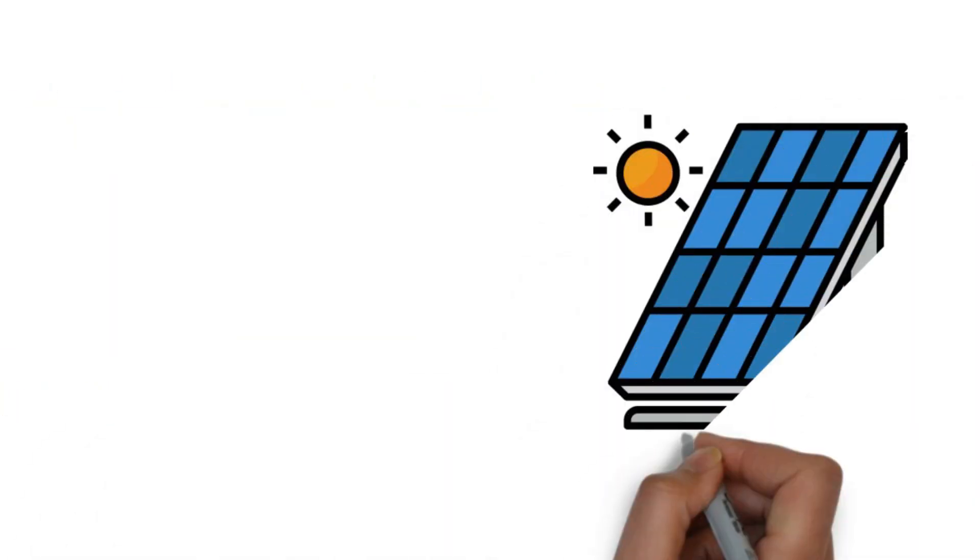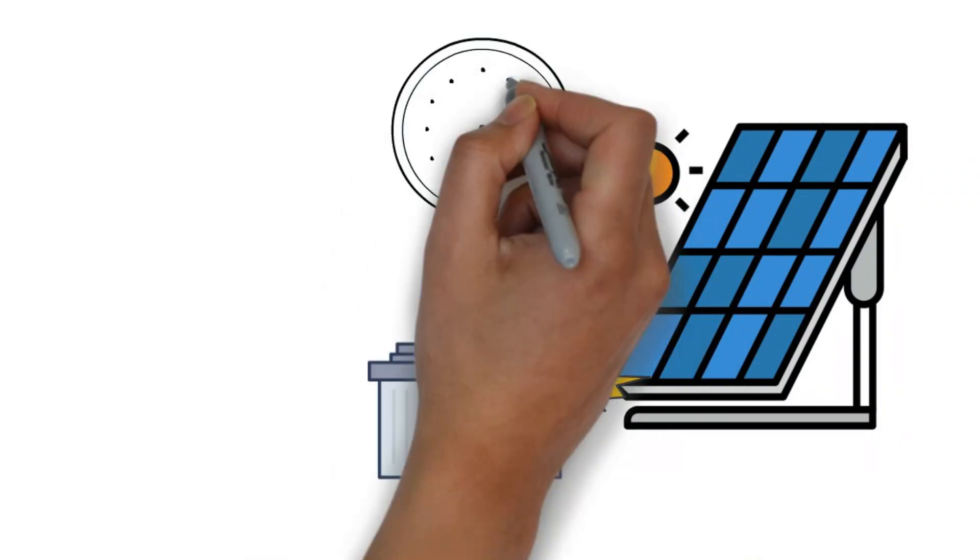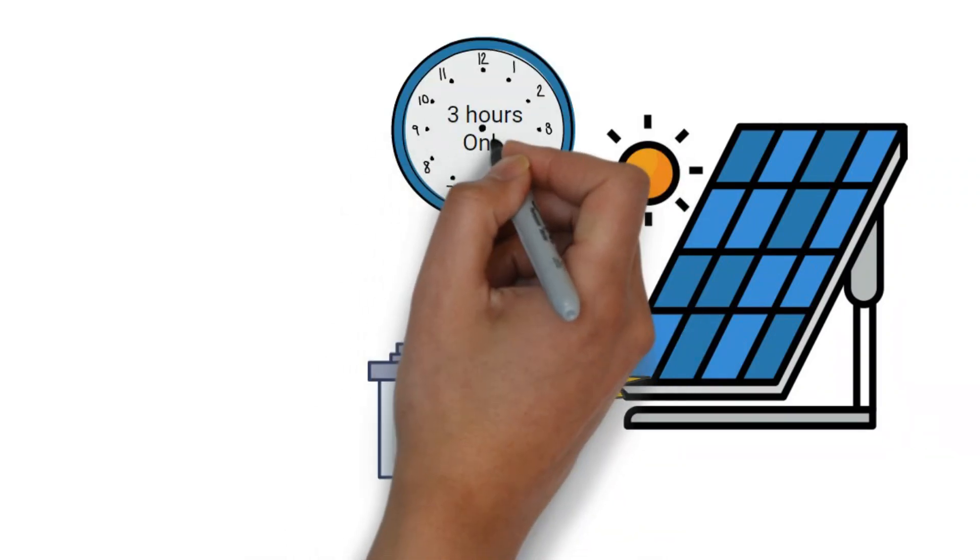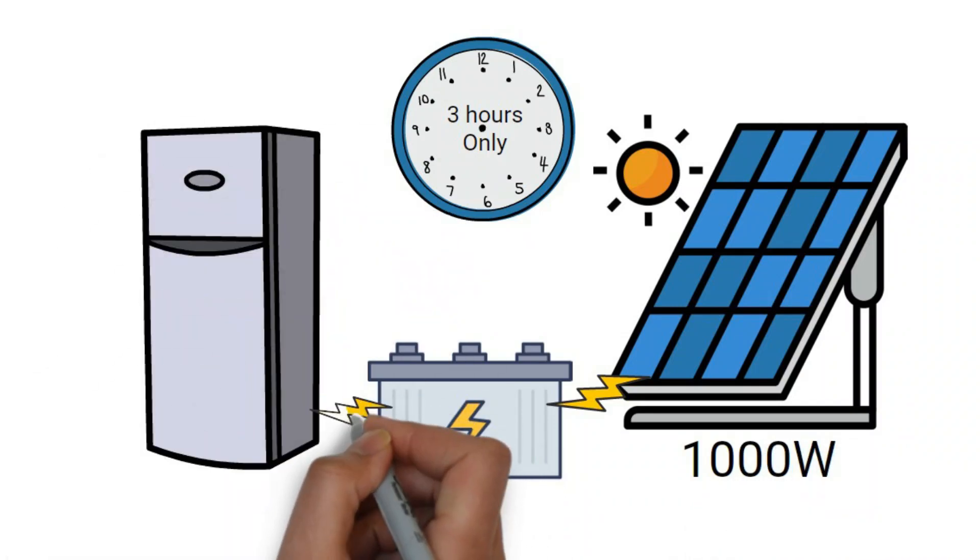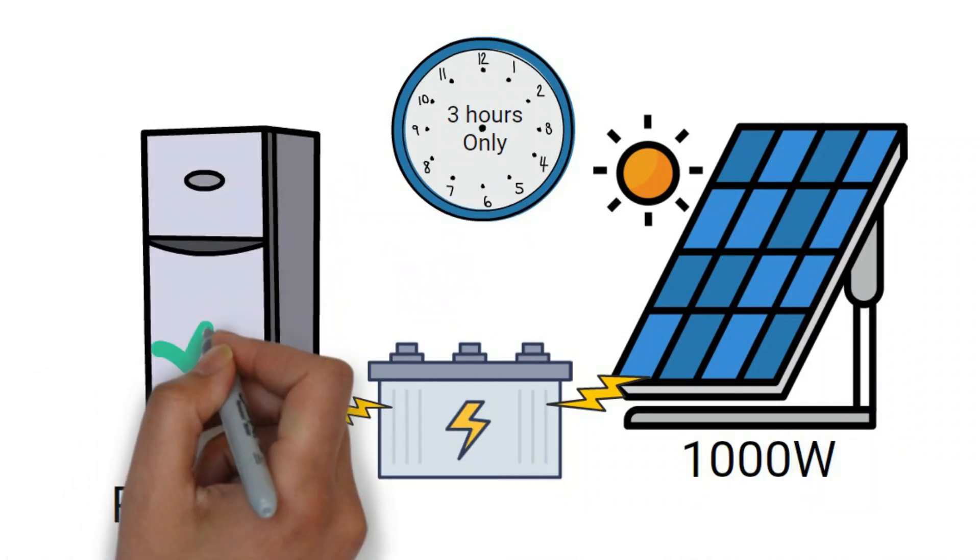Now, let's talk about charging that battery. If you receive an average of three hours of good sunlight per day, then you will need a 1,000-watt solar panel setup to keep your fridge running 24 hours a day, 7 days a week.